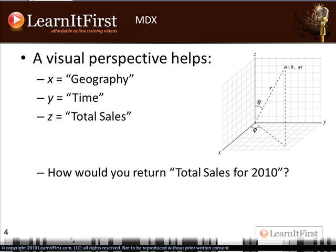We'll talk about how that assumption process works a little later in the course. We are not ignoring geography in this question — it is using the 'All' member, the all member at the hierarchical level. The question gets converted into: what are the total sales across all geographies for 2010? That's what it gets translated to by SSAS. You're querying the entire cube, so you're saying: give me the total sales across all geographies for 2010. You're not able to ignore a dimension.